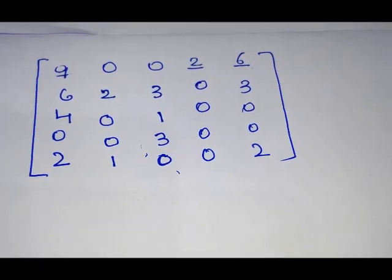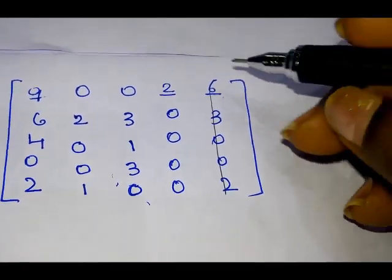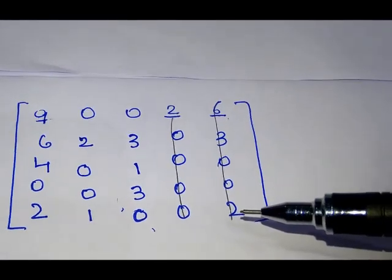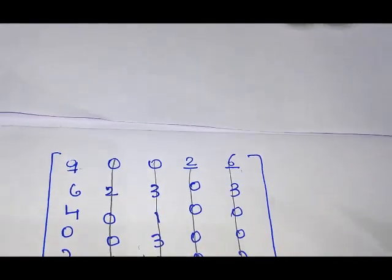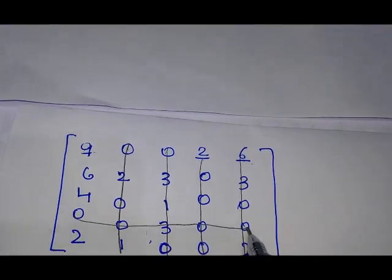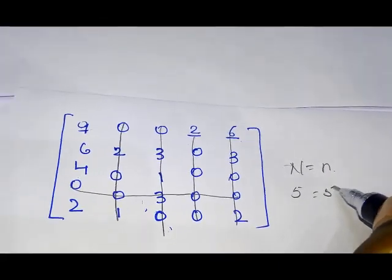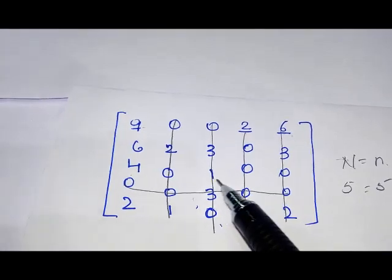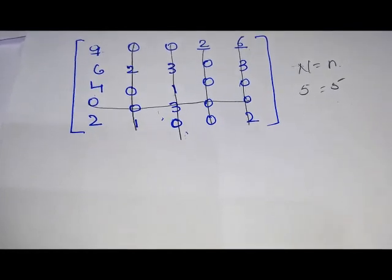Once again we cover all the zeros using horizontal and vertical lines. Two zeros are covered with one line, four zeros in one column are covered with another line, two zeros in another column are covered, three zeros are covered with another line, and the remaining zero with a final line. Now checking the N = n condition: capital N (number of lines) is 1, 2, 3, 4, 5 — and small n is also 5. The condition is satisfied, so we can proceed to the assignment.